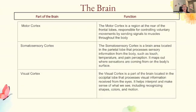The motor cortex is a region at the rear of the frontal lobes responsible for controlling voluntary movements by sending signals to muscles throughout the body. The somatosensory cortex is located in the parietal lobe and processes sensory information from the body such as touch, temperature, and pain perception — it maps out where sensations are coming from on the body surface. The visual cortex is part of the brain located in the occipital lobe; it processes visual information received from the eyes and helps interpret and make sense of what we see, including recognizing shapes, colors, and motion.